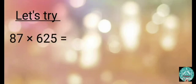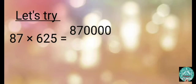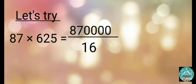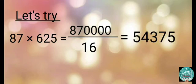Let's try: 87 multiplied by 625. Put four zeros to the right of 87, then divide it by 16. So the answer is 54,375.